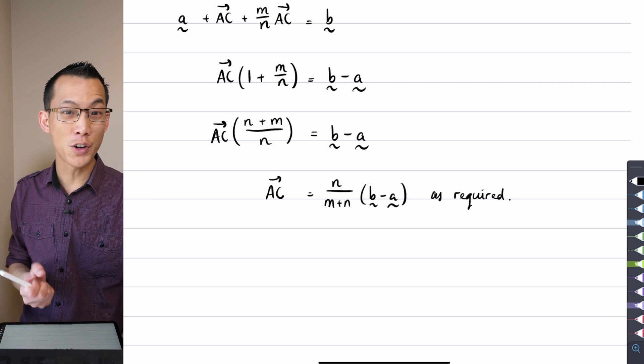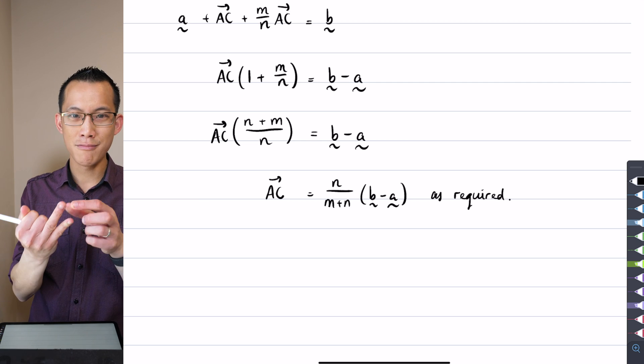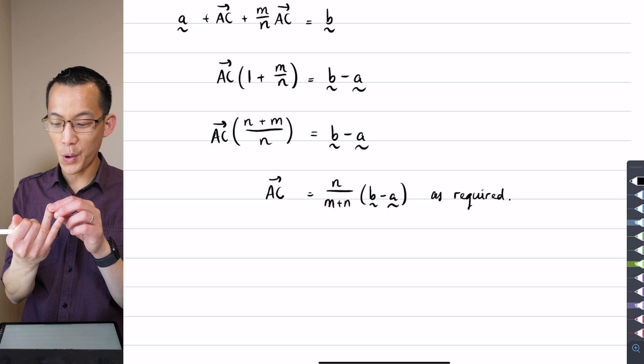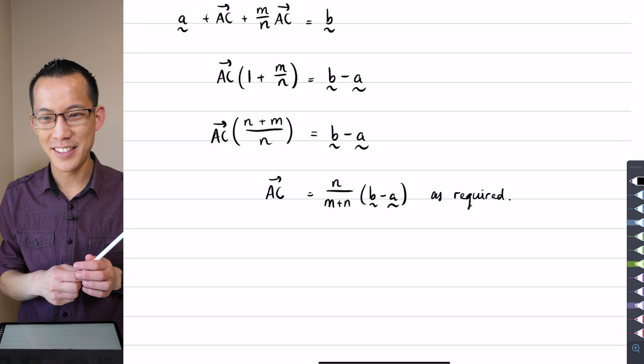Can you just post in the chat for me—you've got one of three options. Either I solved it that way that was just shown, I solved it a different way, or I didn't solve it, like I was just a bit confused and I couldn't quite get there. Can you let me know?